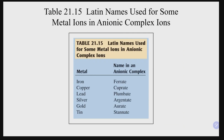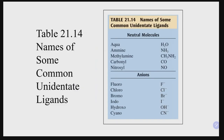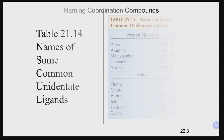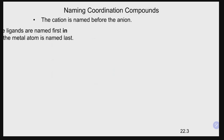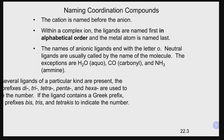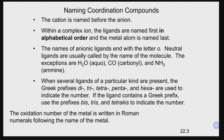Here are the older Latin-based metal names used when the complex ion is negative. Some common ligand names include: fluoro, chloro, bromo, iodo for the halogens — similar to organic chemistry naming conventions.